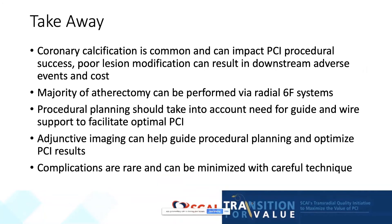In summary: coronary calcification is remarkably common and can impact PCI procedural success. Poor lesion modification may result in downstream adverse events and cost. The majority of atherectomy can be performed via radial approaches. Procedural planning should take into account the need for guide and wire support to facilitate optimal PCI. Adjunctive imaging both before and after atherectomy and stenting can help guide procedural planning and optimize results. Complications are rare but known and can be minimized with careful technique.